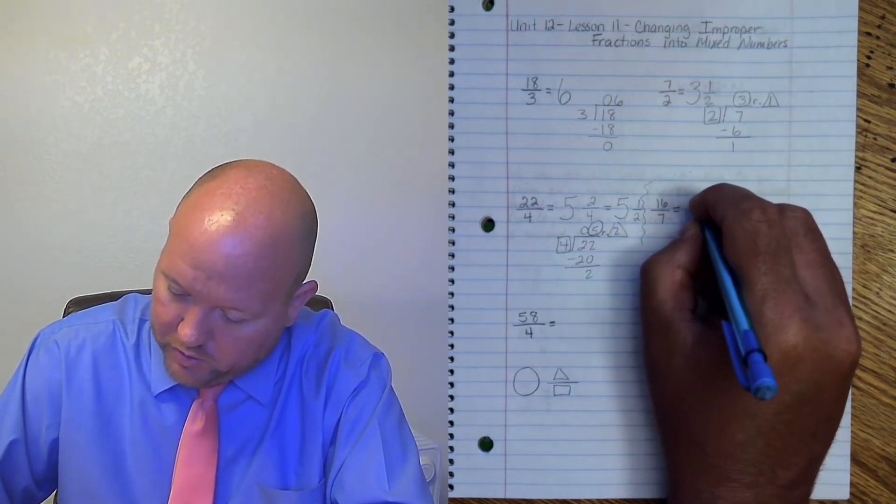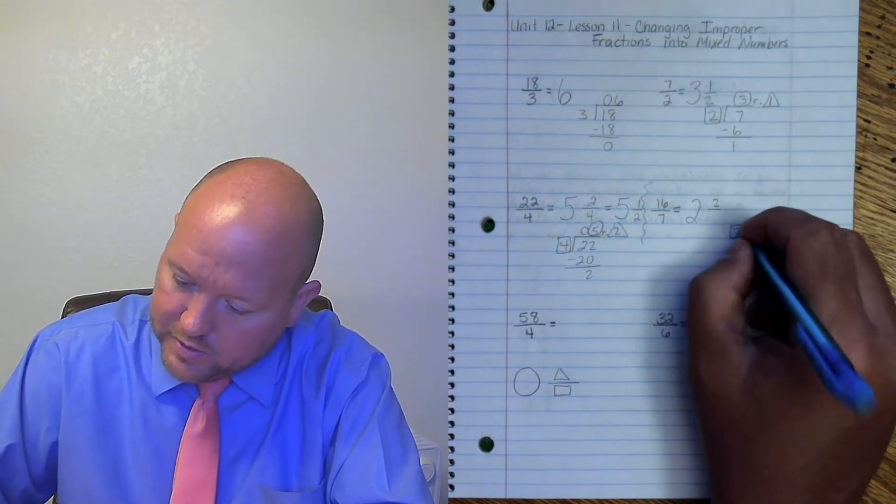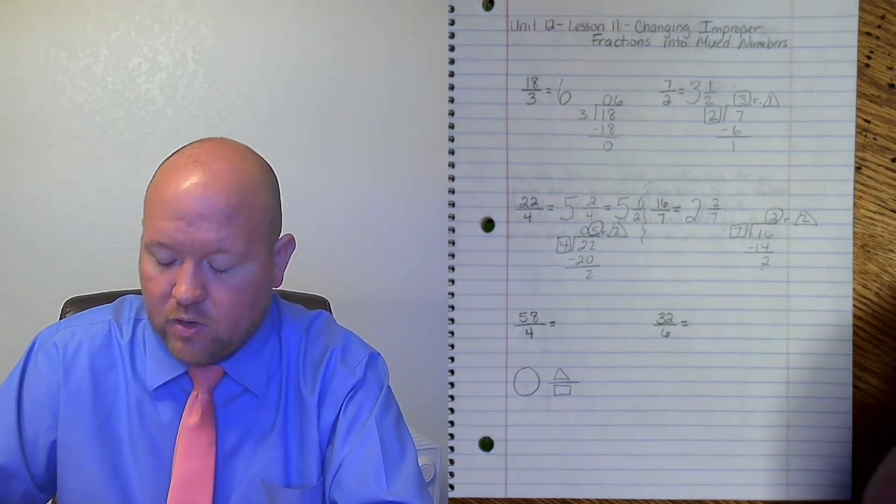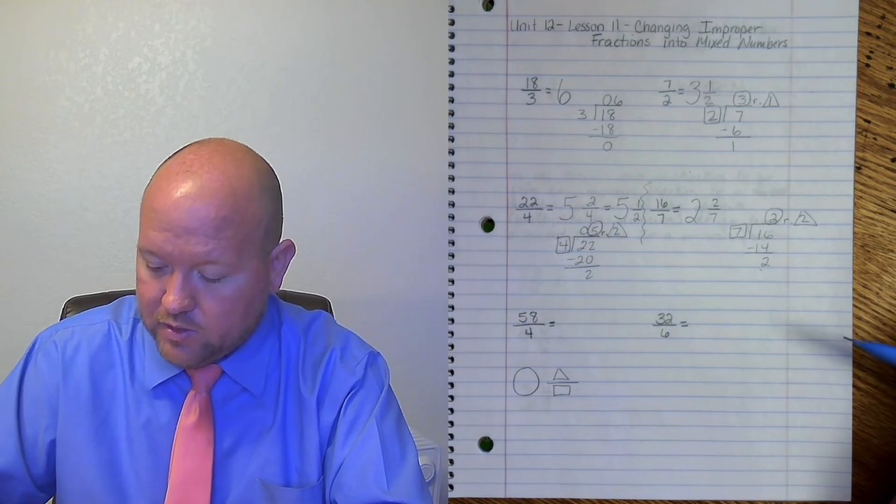Circle goes on the ground, is the whole number. That's a 2. 2 is my numerator. 7 is my denominator. So 16 sevenths equals 2 and 2 sevenths.